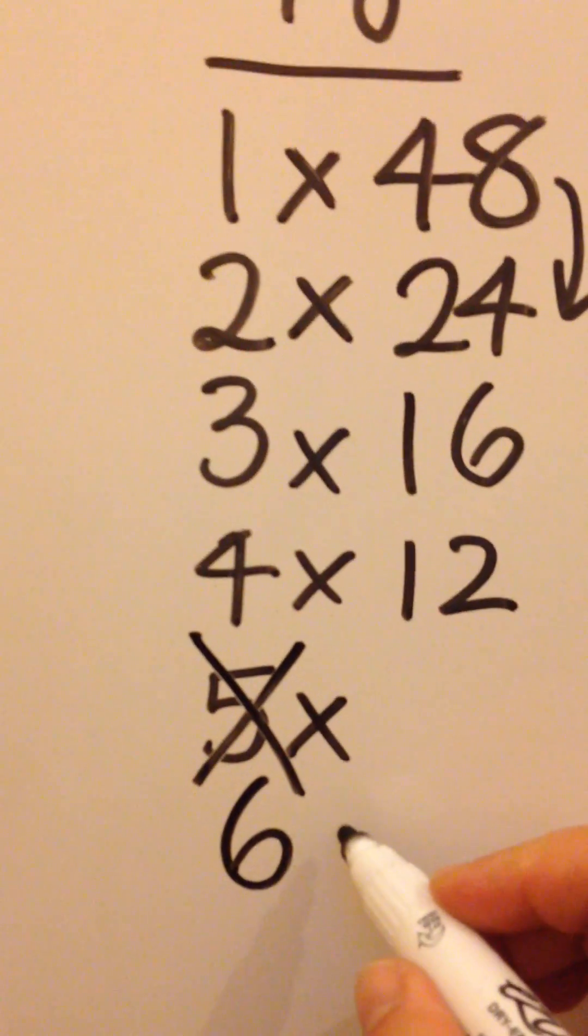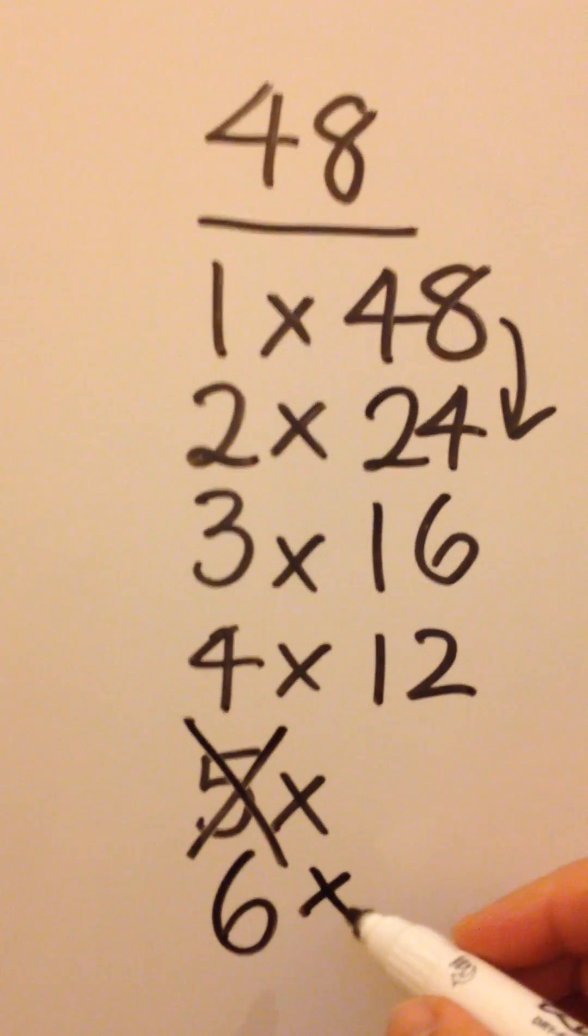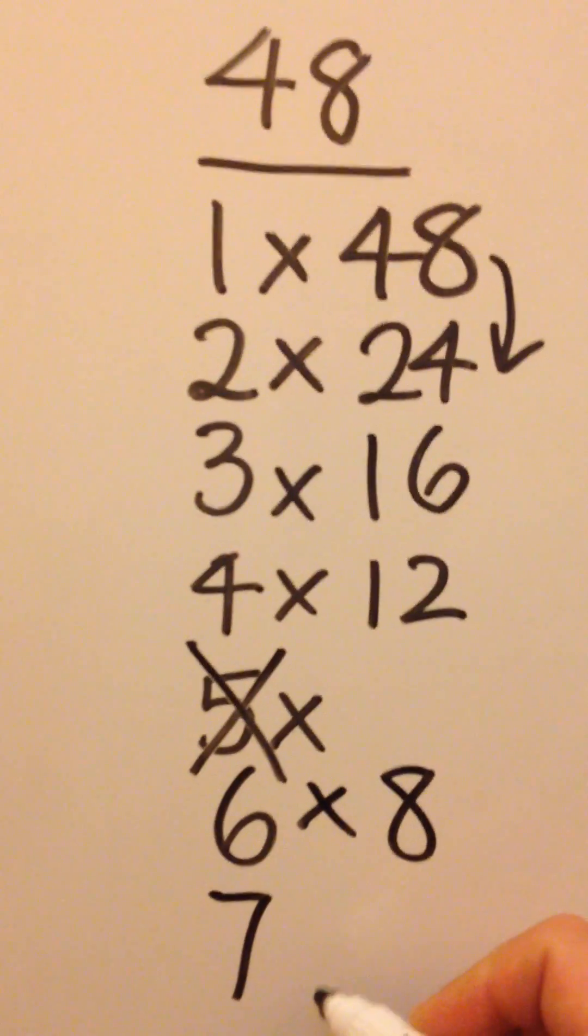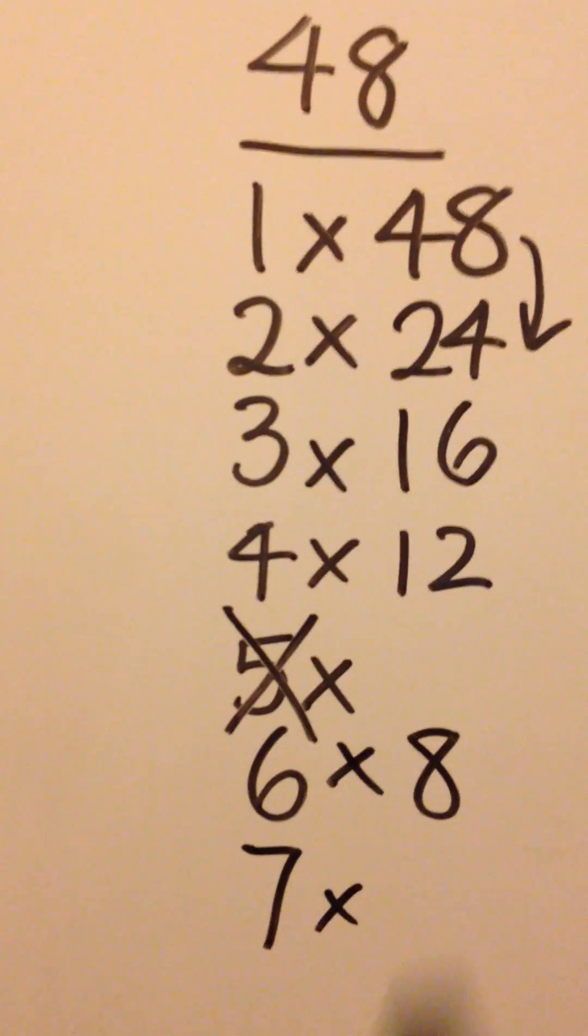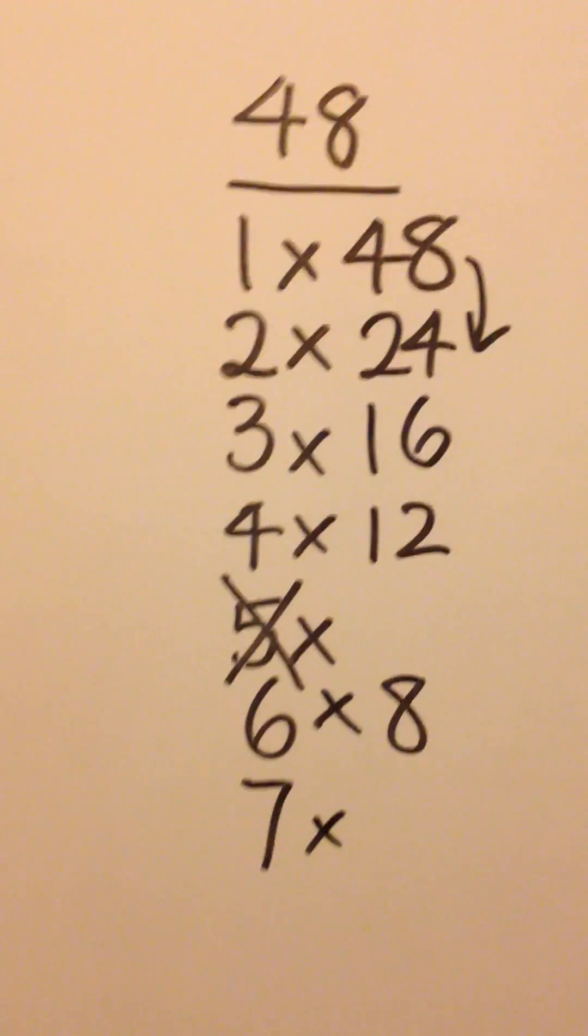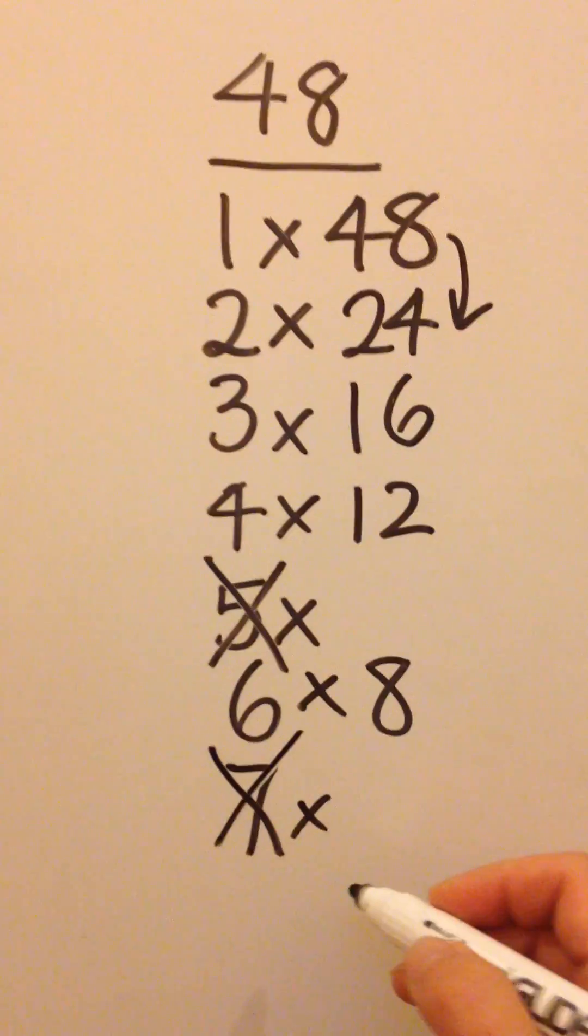Moving on to 6. 6 times what is 48? The answer is 8. When I move on to 7, I know that 7 is not a factor of 48, because in the 7 times table, 48 is not one of the answers. So let's cross it off.